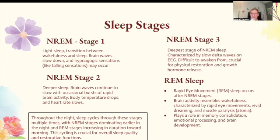REM sleep stands for rapid eye movement. It occurs after the NREM stages, and brain activity resembles wakefulness. It's characterized by rapid eye movements, vivid dreaming, and muscle paralysis — also known as atonia. REM sleep plays a role in memory consolidation, emotional processing, and brain development. Throughout the night, the sleep cycle moves through these stages multiple times, with NREM stages being more prominent earlier in the night, while REM stage duration increases closer to morning. This is super important for overall sleep quality and restorative functions.